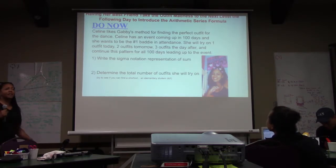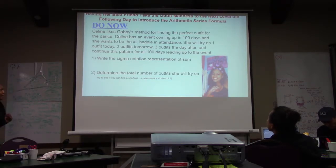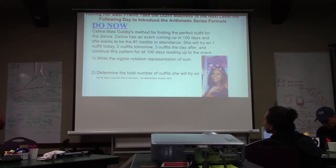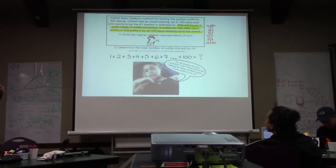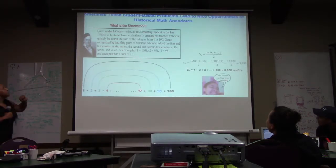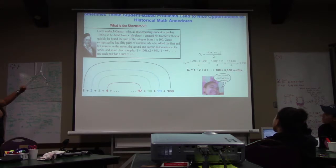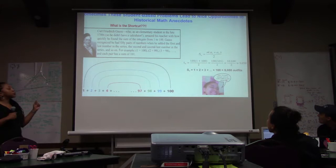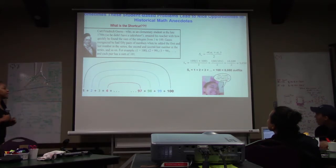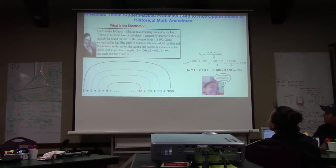The best friend has an event a hundred days from now. We know how to write the sigma notation, and sure, we can add one plus two plus three up to a hundred — but can you find a shortcut? Guess what? An elementary student did. That's the motivation. And sometimes these student-based problems lead to nice opportunities for historical math anecdotes, where I can talk about Gauss and how he was able to find those 50 pairs and come up with this nice formula. And yes, she actually is crazy enough to try on 5,050 outfits.